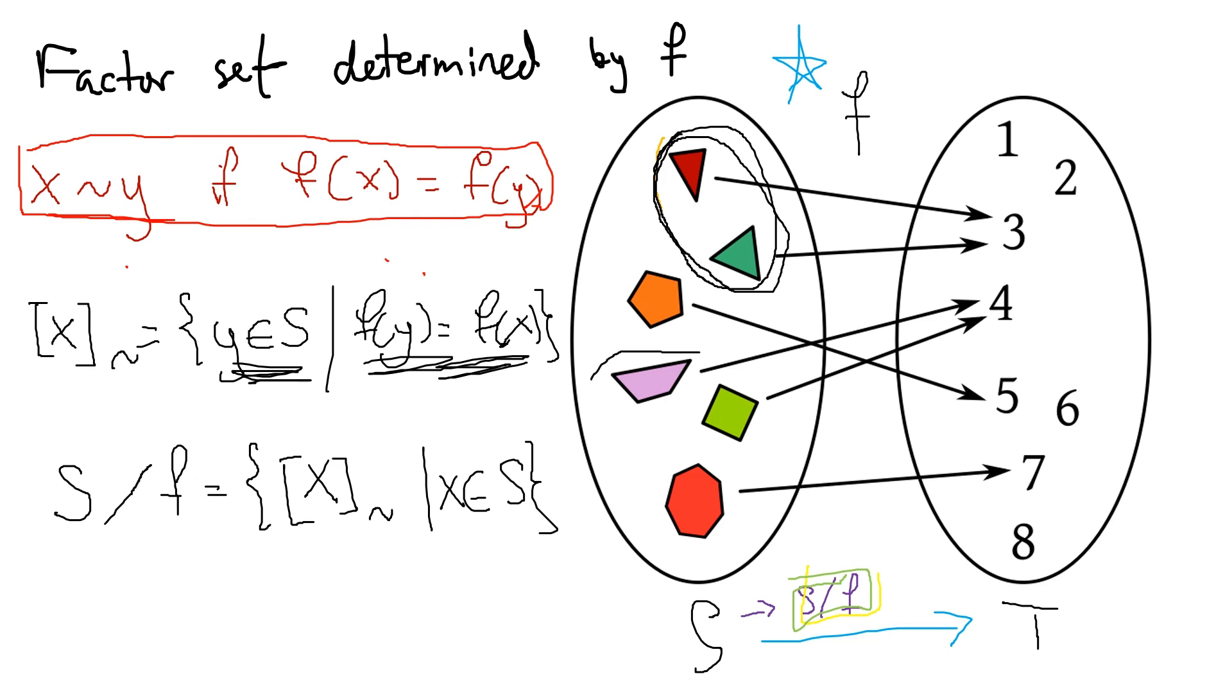Similarly, these two shapes are mapped to the same output. So in the factor set, we just say that these things are the same. We just group these together.